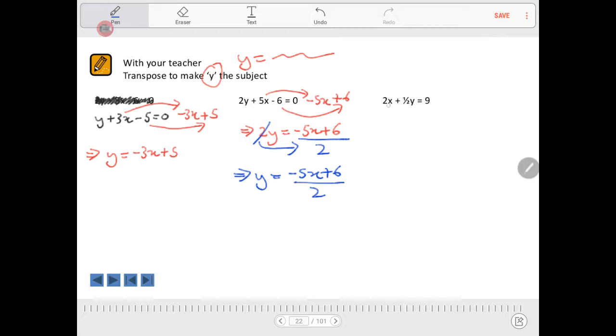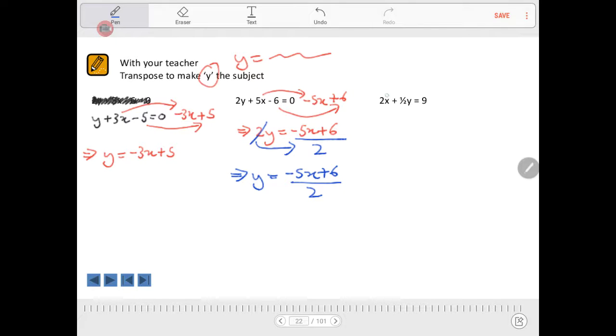So firstly, 2x, well, this is a positive 2x, so he's going to go over and become negative 2x. So the next line looks like this.